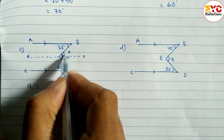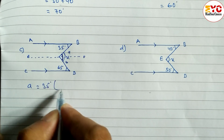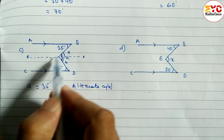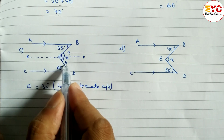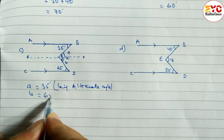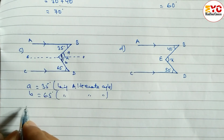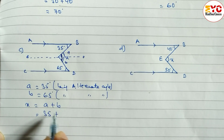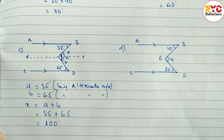Let's find out A. You can see here these two angles form a Z-shape, so A is equal to 35 degrees. Reason: being alternate angle — one is on the left side and one is on the right side of the line. Similarly, B is equal to 65 degrees. Reason: being alternate angle. After that, x is equal to A plus B, which is 35 plus 65. When you add both angles, we get 100 degrees. So value of x is equal to 100 degrees.